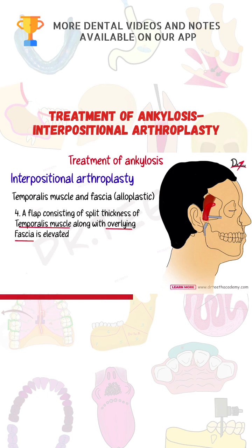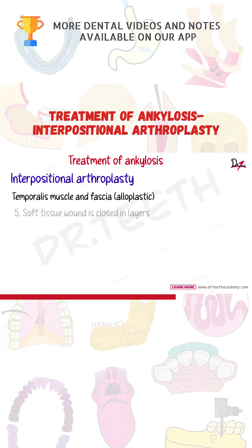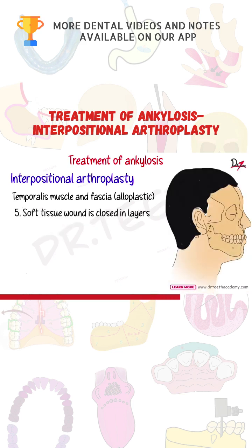A flap consisting of split thickness of the temporalis muscle along with the overlying fascia is elevated and used as an interpositional material. This prevents re-ankylosis. After this, the soft tissue wound is closed in layers. This is the procedure for temporalis muscle and fascia interposition.